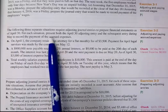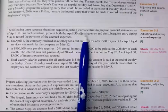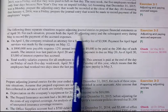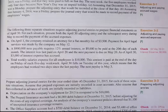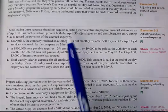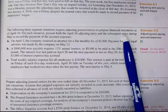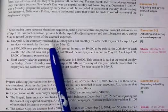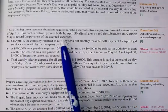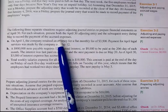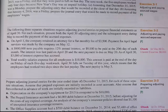For each situation, present both the April 30th adjusting entry — that's what adjusting entries are for, to record those revenues or expenses or any adjustments to make sure they are incurred within the time period — and the subsequent entry during May to record the payment of the accrued expense. An accrued expense is any expense incurred but not yet paid in cash or recorded.